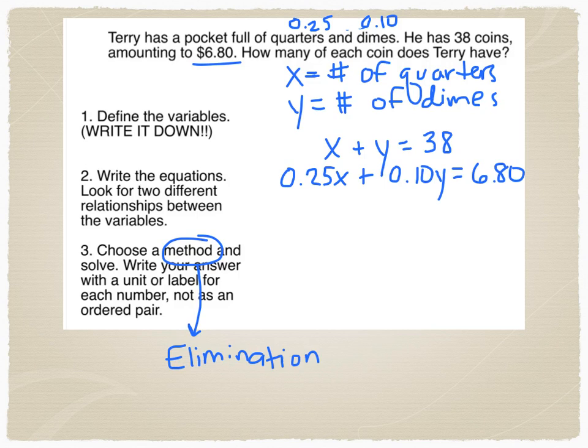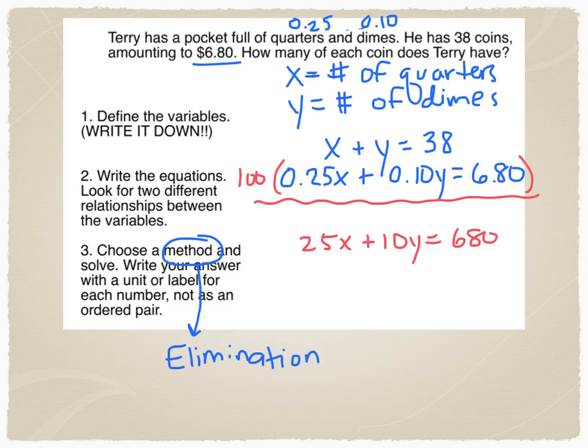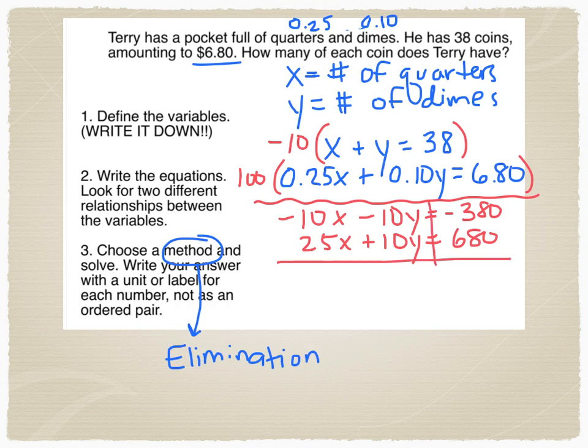Now this is going to be one where we're going to use elimination. First of all, I want to make the decimals go away in the second equation. So I'm going to multiply everything in that second equation by 100. And that is going to leave me with 25x plus 10y equals 680. But I have x and 25x, y and 10y. So I need to figure out a way to set this up for elimination. I'm going to multiply that top equation by negative 10 to eliminate the y. So negative 10x minus 10y equals negative 380. I can cancel the y's. Negative 10 plus 25 is 15x equals 300. When I divide by 15, I'm going to get x equals 20. And that means I have 20 quarters.